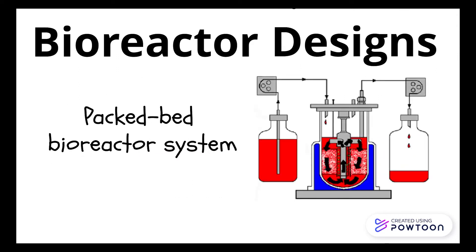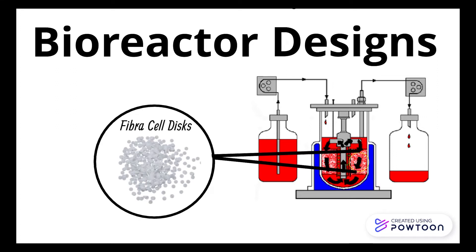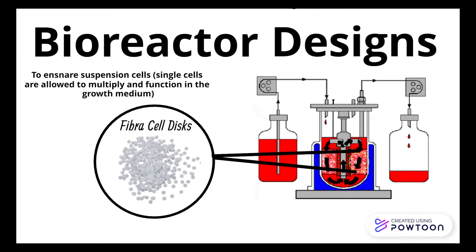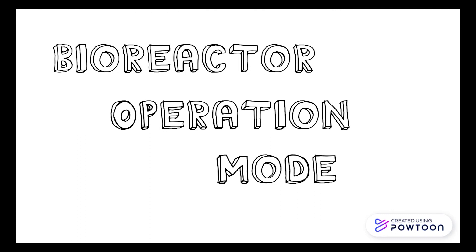The packed bed bioreactor system is equipped with a packed bed impeller designed to have punctured metal screens horizontally positioned in a basket. It also consists of fibrocell discs placed between the metal screens, which either suspend cells or create a surface for anchorage-dependent cells to adhere to.